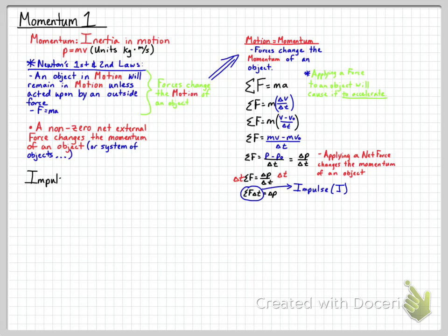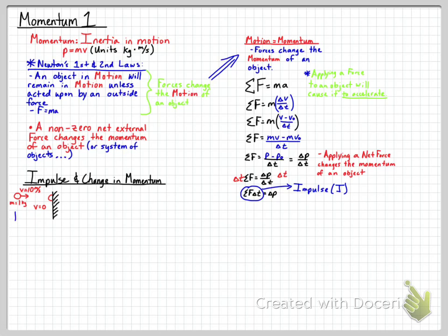Now let's go into impulse and the change in momentum with an example. We have a wall, and we're going to take a ball with a mass of one kilogram and throw it at 10 meters per second at the wall. When it hits the wall, it has a velocity of zero and sticks to the wall — it's glued or a very sticky substance. We'll call the throwing side the initial and the wall side the final.